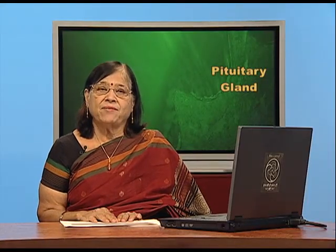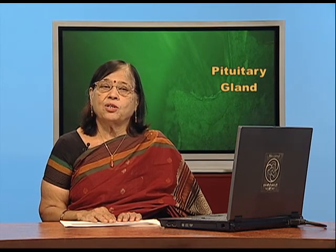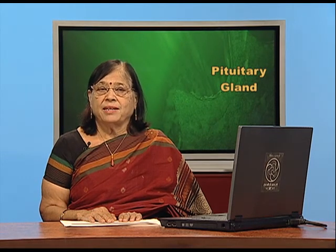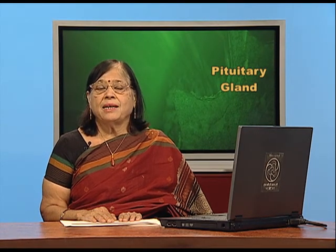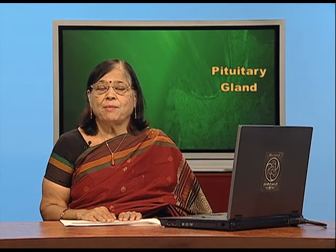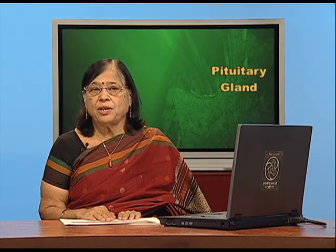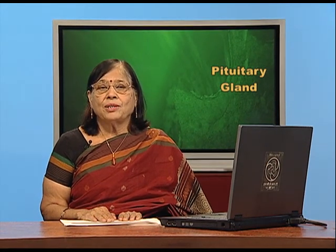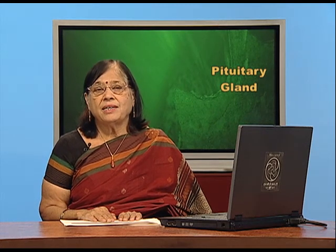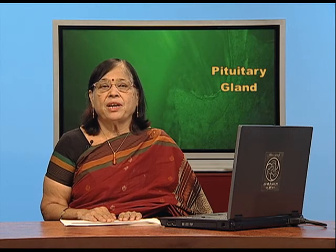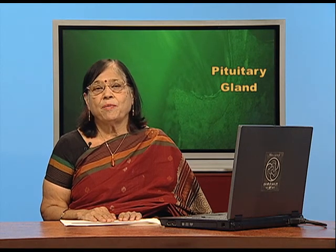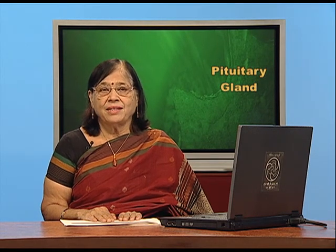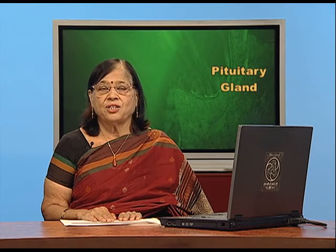In this session we have discussed the pituitary gland, the three lobes of the pituitary, nine hormones coming out from the pituitary (six plus two plus one), the control of the pituitary by the hypothalamus in relation to both anterior and posterior pituitary, and how the hormones of the pituitary act on different endocrine glands, which in turn release hormones that take care of our body in different ways. With this, we come to the end of this session. Thank you.